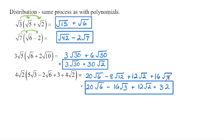Thinking back to polynomials, if we had a monomial times a binomial, we distributed it in to get our values. Radicals work the same way. We multiply the first coefficient by the first term's coefficient: 1 times 1 gives us 1, and 3 times 5 when we multiply the radicands gives us 15. Then we multiply the square root of 3 times the square root of 2: 1 times 1 is 1, and 3 times 2 is 6. Check for any perfect squares — if not, we're good.